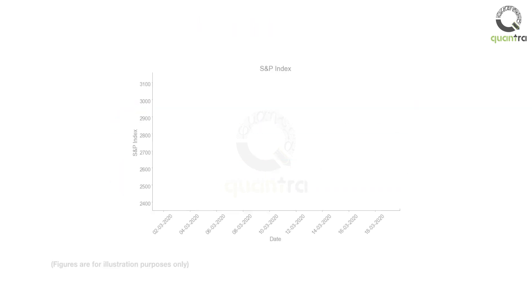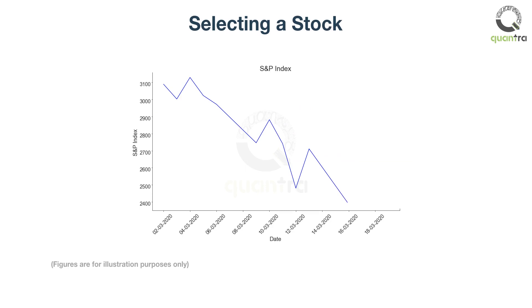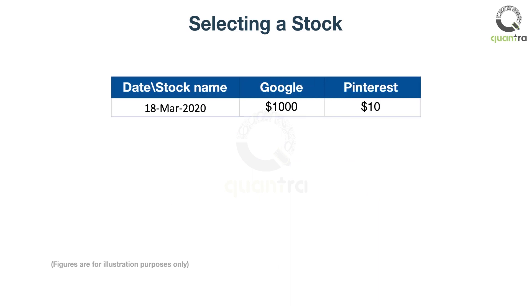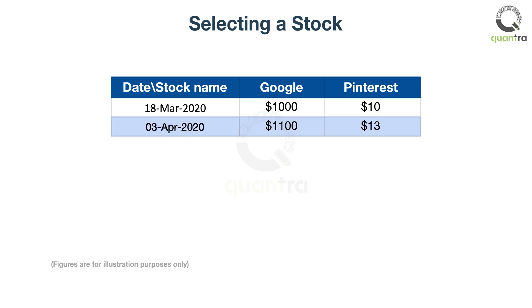During March 2020, the stock market declined sharply due to the effect of the COVID-19 pandemic declaration. On March 18, suppose the stock price of Google and Pinterest are as shown on the screen. In the next two weeks, both companies registered an increase in their stock price. If both stocks had an equal risk profile, which stock has performed better?